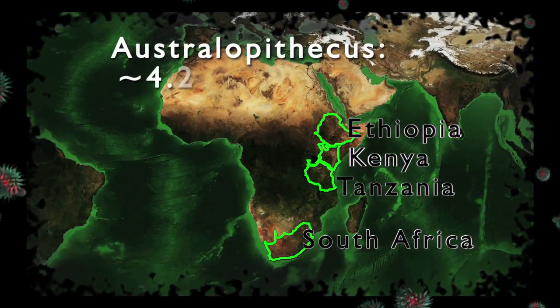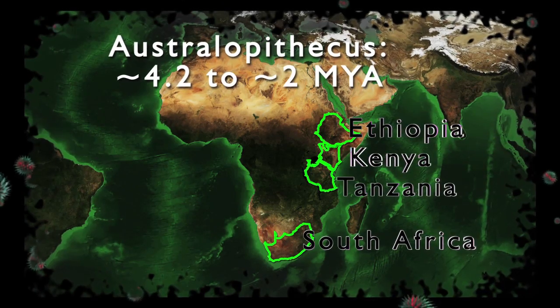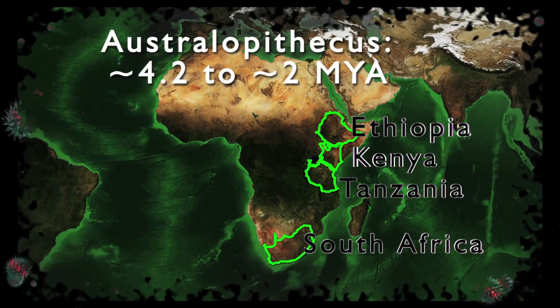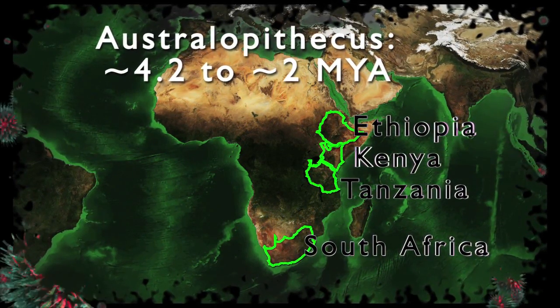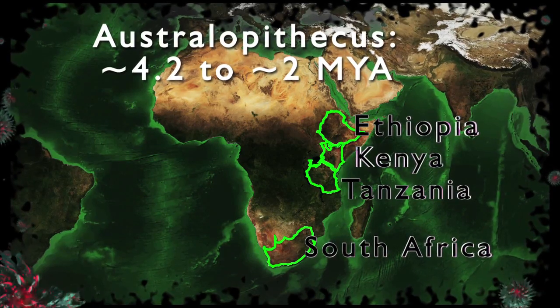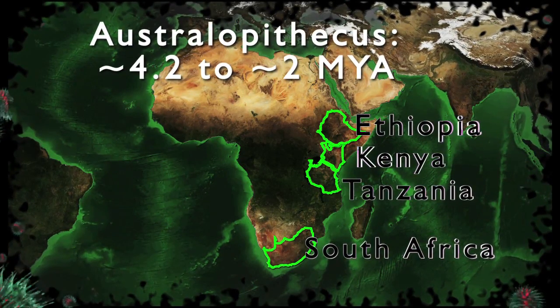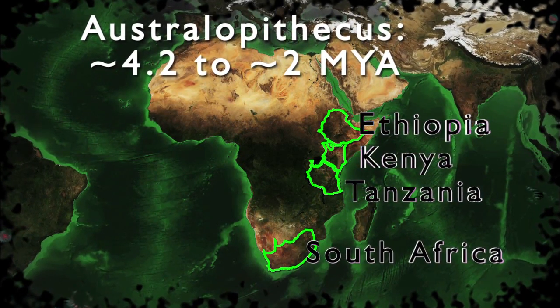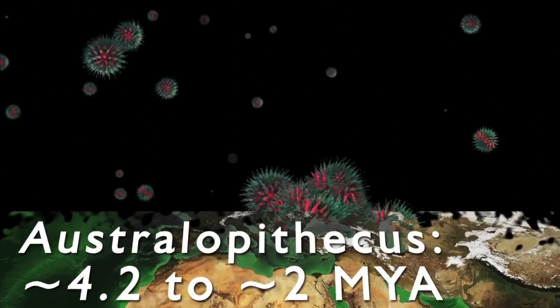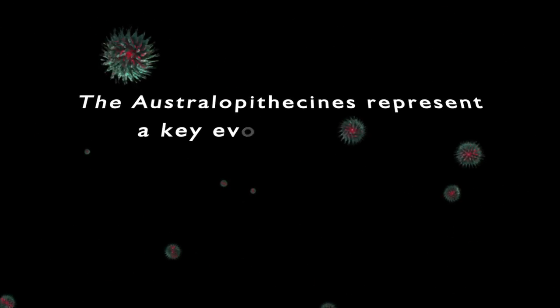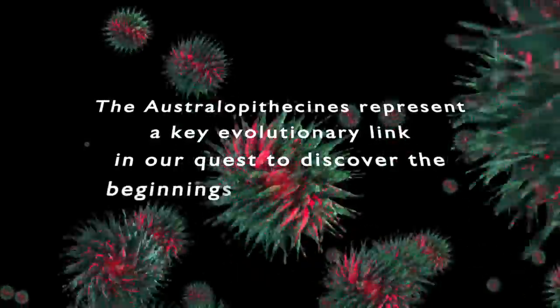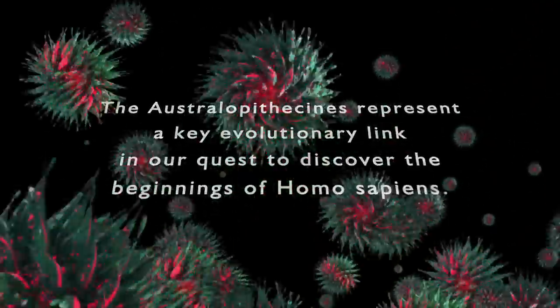The genus Australopithecus covers a time span from around 4.2 million years in the past forward to around 2 million years in the past. The Australopithecines ranged all across eastern Africa from present-day Ethiopia to South Africa. The Australopithecines represent a key evolutionary link in our quest to discover the beginnings of Homo sapiens.